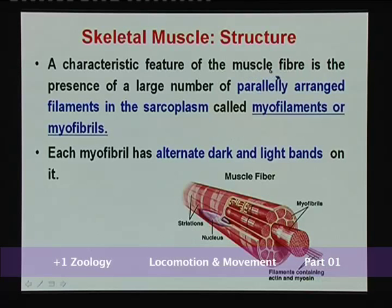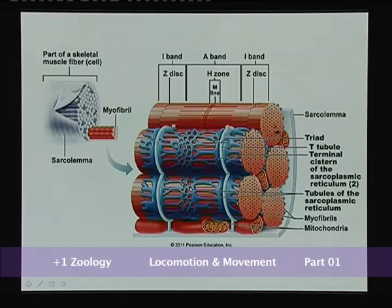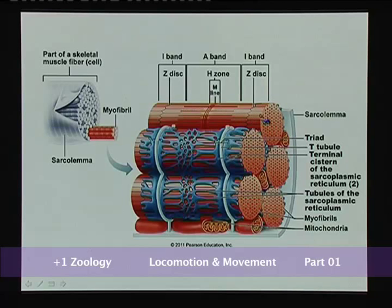Another characteristic feature of the muscle fiber is the presence of large numbers of parallely arranged filaments in the sarcoplasm, called myofilaments or myofibrils. These myofibrils show alternate dark and light bands, which is why skeletal muscle is called striated.